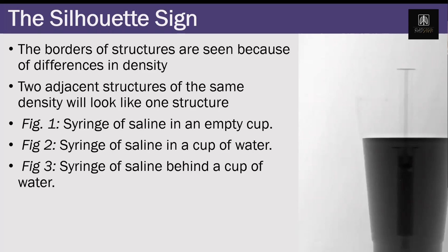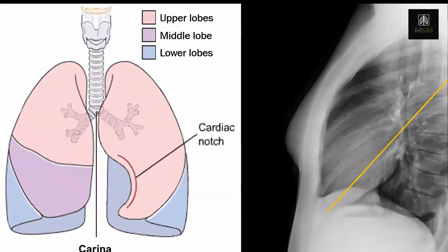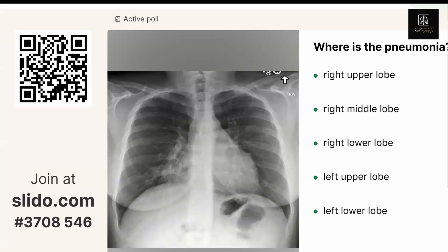That is the principle behind the silhouette sign: the borders of structures are seen because of differences in density. Remembering where the upper lobes, middle lobe, and lower lobes are — in this picture we lose the right heart border. Something is present here, and I want you to tell me which lobe it's in. The hint is that the right heart border is obscured.